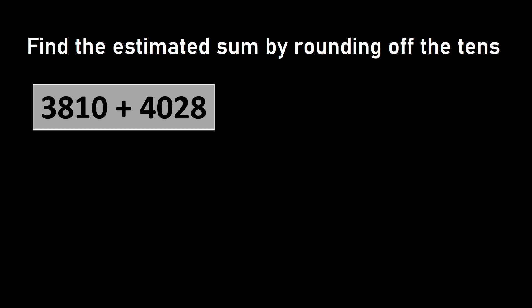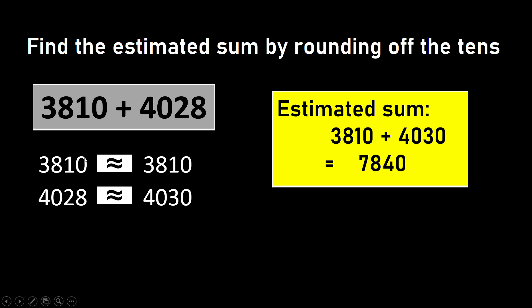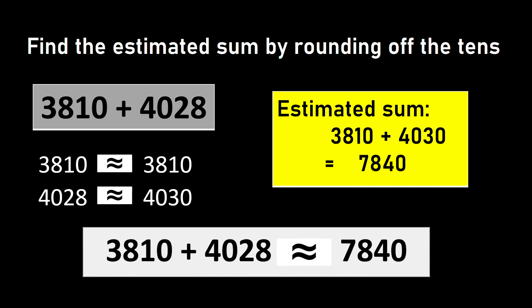Next we have a four-digit addition: 3810 plus 4028. Here 3810 stays as 3810 and 4028 is rounded up to 4030. Hence the estimated sum is 3810 plus 4030, which is equal to 7840. Hence we say 3810 plus 4028 is approximately equal to 7840.